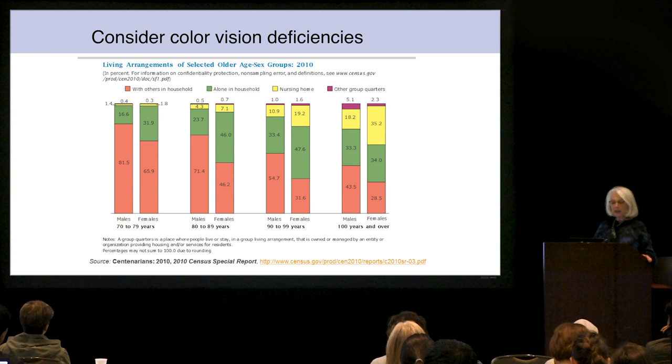A major problem in charts done in almost any field, not just life science, is that they don't consider people with color vision deficiencies. Lots of books and speakers have said just avoid red and green, but just avoiding red and green does not solve the problem. Most people who have color problems can distinguish between a very dark red and a light green, or a very dark green and a light red. Lightness has a lot to do with it.